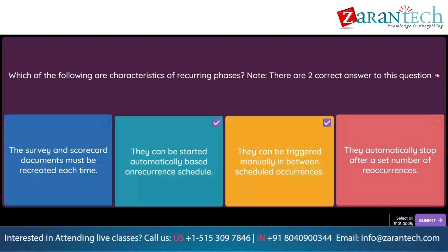Question. Your customer wants to include a system group or project group in the approval flow for a new supplier. Which of the following is a limitation with a simple approval rule for SAP Ariba templates? Option 1: Only one user can be added as an approver in a simple approval rule. Option 2: The system will accept the approval from a single user within the group. Option 3: Project group members must be assigned using a team member rules file. Option 4: System groups cannot contain users.